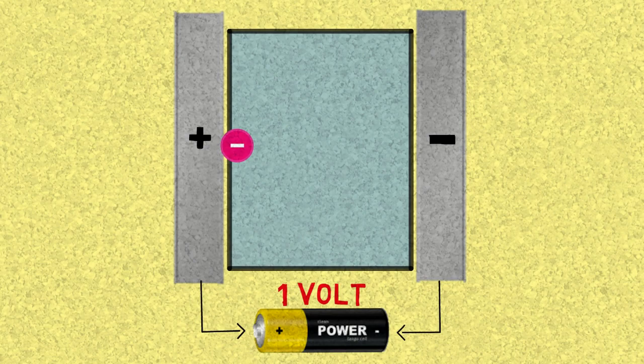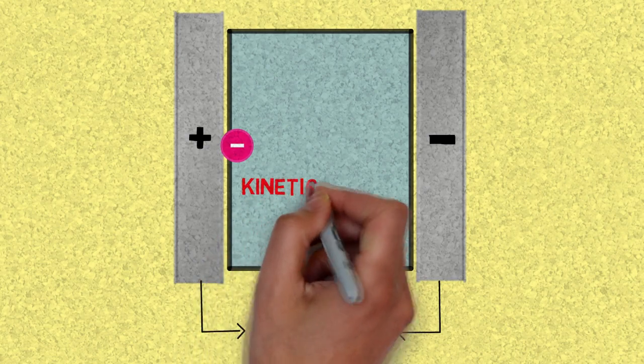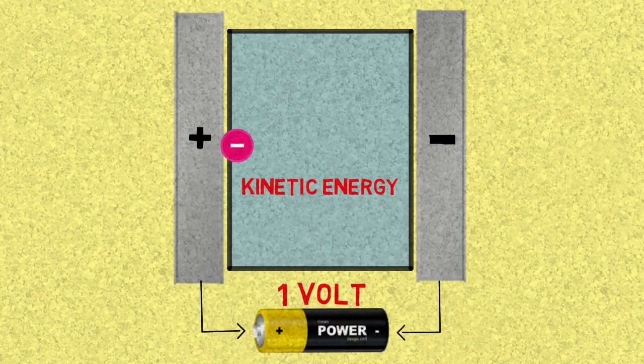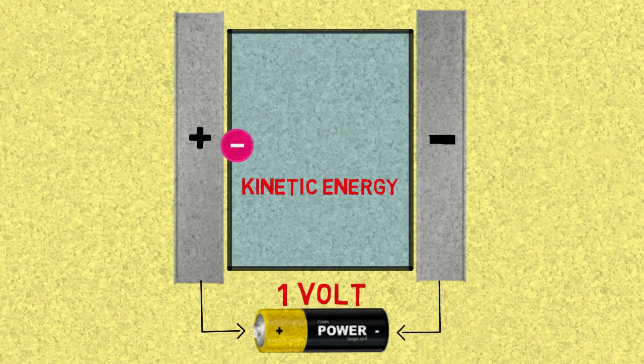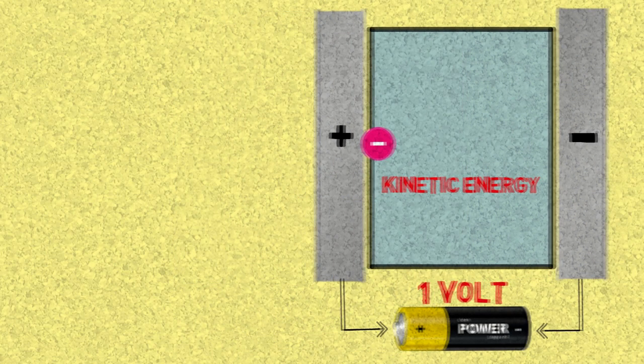When it moves, it has a kinetic energy of course because it's moving, and it gains that energy from the field. That energy is one electron volt.